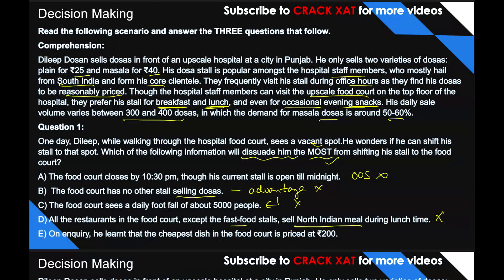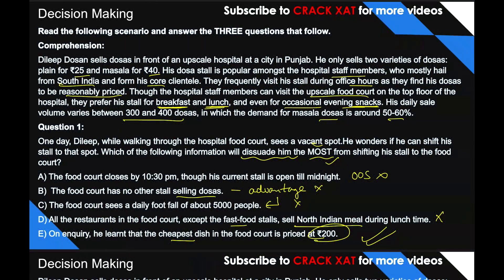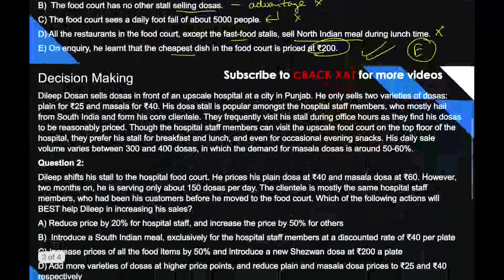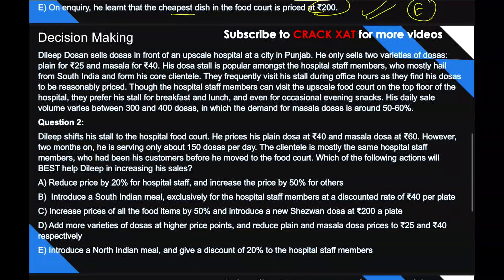We are left with option E: on inquiry he learned that the cheapest dish in the food court is ₹200. That will surely discourage DD because his dosas are priced at ₹25 and ₹40, which is way less than ₹200 — the cheapest item in the food court. So moving there would put him completely out of the pricing league of that space. Option E is the correct answer for question 1.